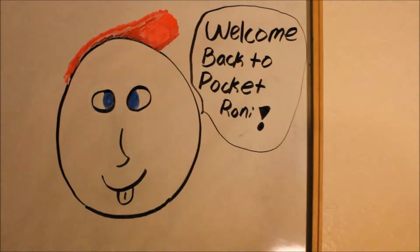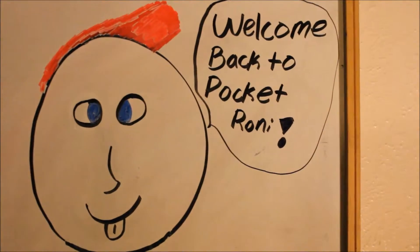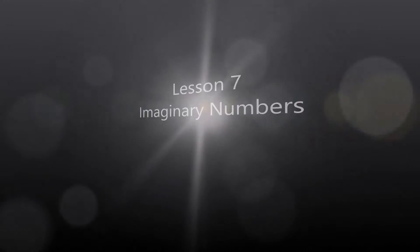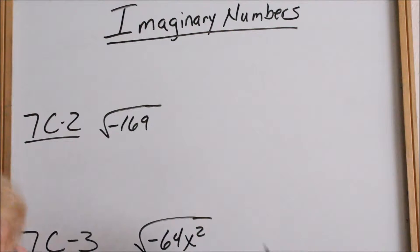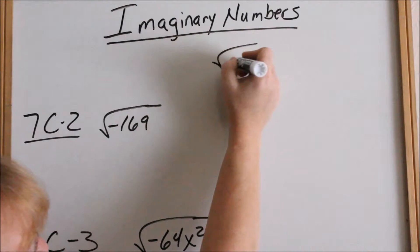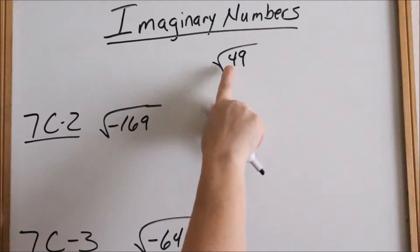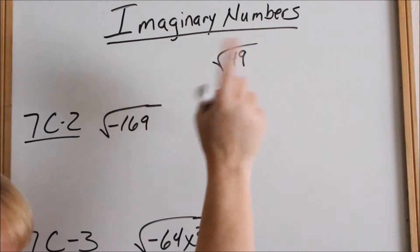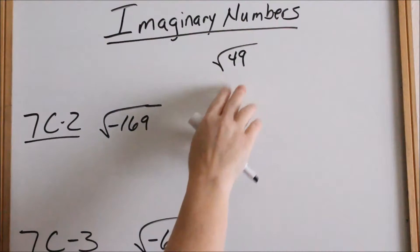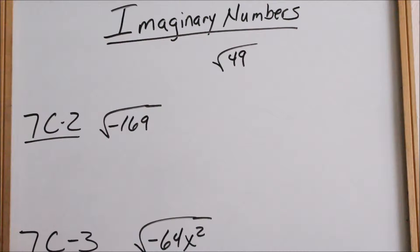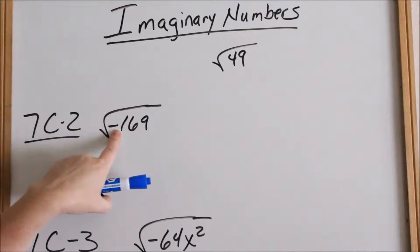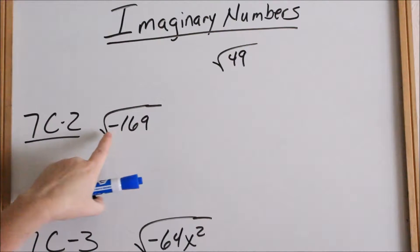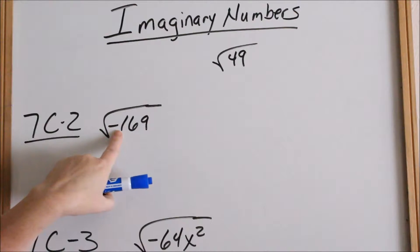We're going to be doing imaginary numbers. What you have seen so far is the square root of 49 — no negative under the radical. Now in 7c2, you're going to see a negative under the radical. Do not get this confused with a negative outside the radical. A negative under the radical implies an imaginary number.